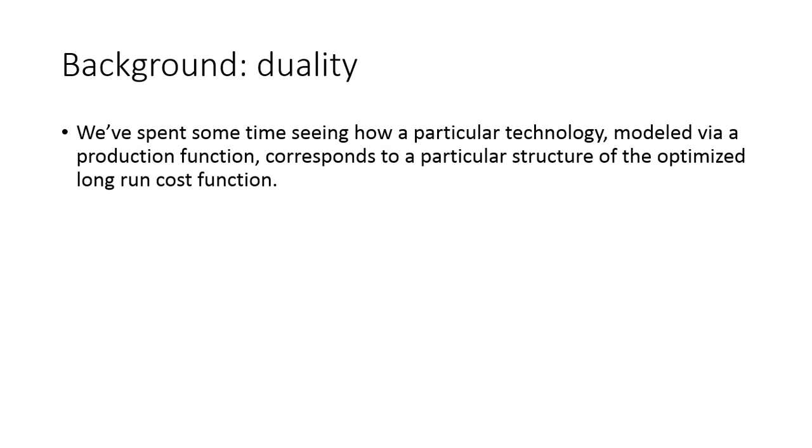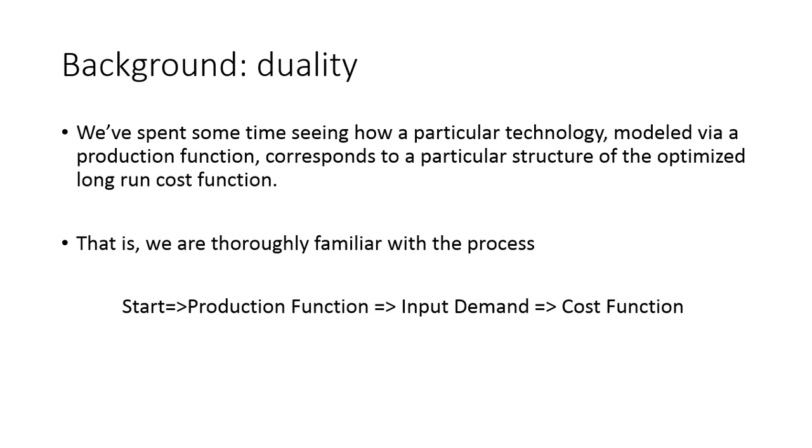So what we're going to do next, now that we've spent some time seeing how a particular technology implies a particular cost function, we should be slightly familiar with this process. The process we just went through was we started with the production function, then we were able to generate the input demands via this process of cost minimization. And last but not least, we plug the input demands into the optimized expenditure function to get our cost function.